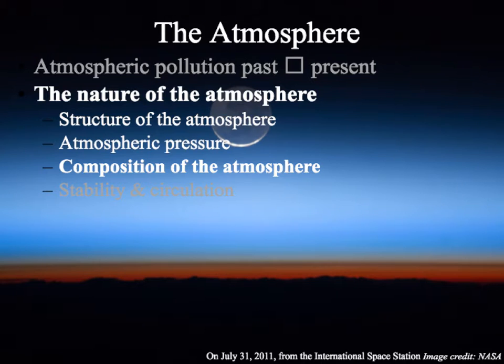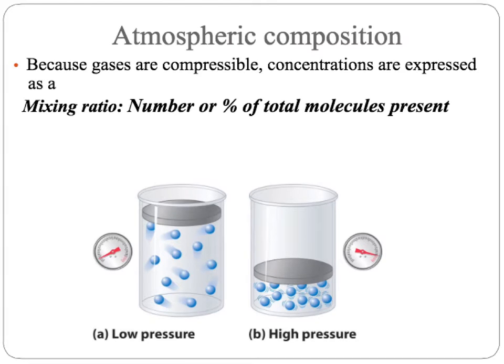Here we're going to talk briefly about the composition of the atmosphere. When we talk about the concentration of a gas, it doesn't really make sense to talk in terms of mass per volume because gases are compressible, so volumes can change. So instead we use something called a mixing ratio — that's the number or percentage of the total air molecules present that is the gas you're interested in.